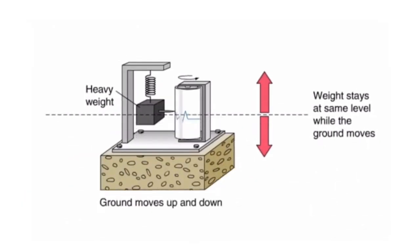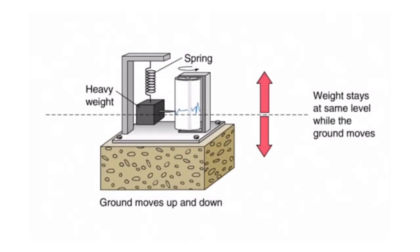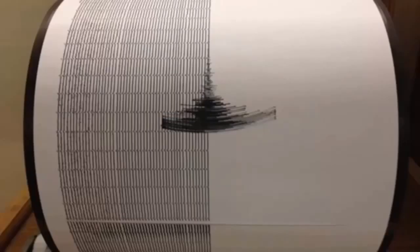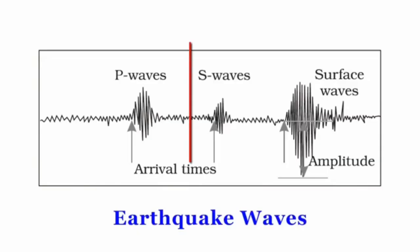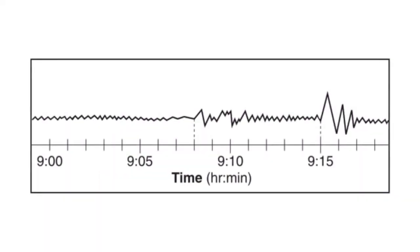Now, how do we determine the epicenter of an earthquake using triangulation method? For example, we have a reading from a seismometer like this one. The reading in a seismometer looks something like this. We have the P waves, the S waves, and the surface waves. The P waves, this one, is the first wave to arrive in a seismometer, followed by the secondary waves or the S waves, and the surface waves.